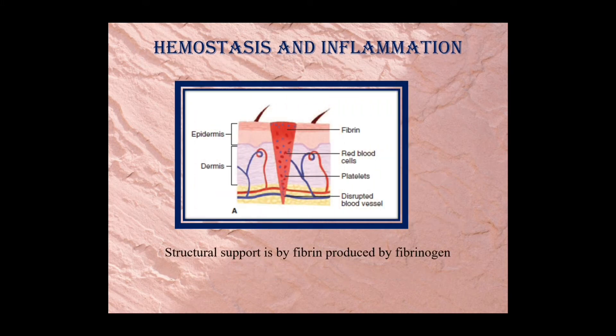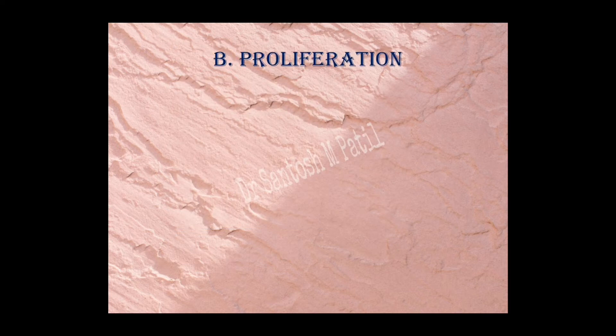This picture shows disruption of the vessels followed by platelet aggregation, then migration of inflammatory infiltrates and fibrin deposition. Once the debris has been cleared, a structural support of the base is formed mainly by fibrin produced from fibrinogen, over which the next phase — proliferation — starts taking place.